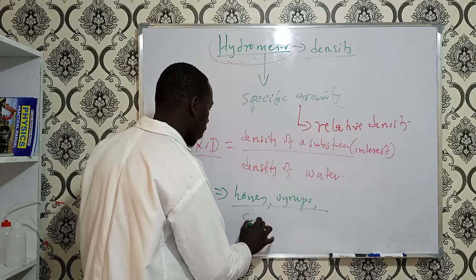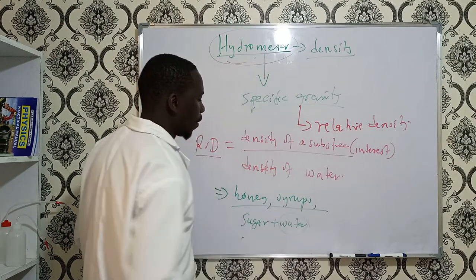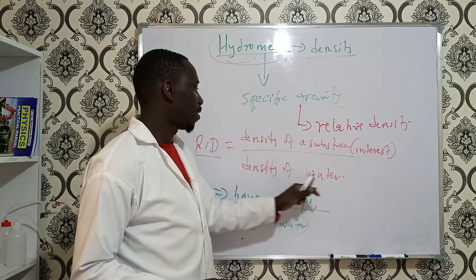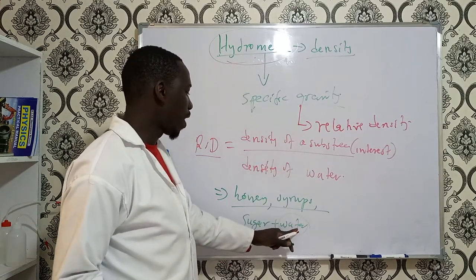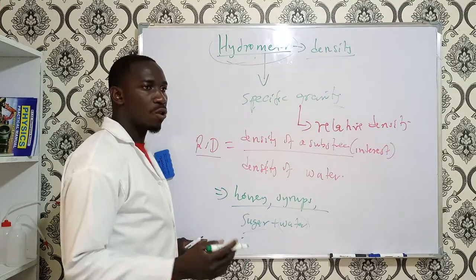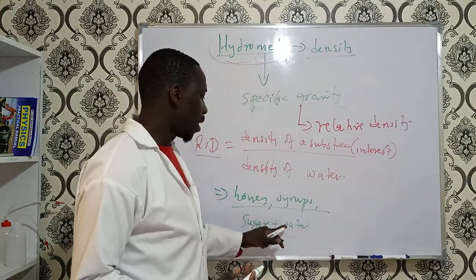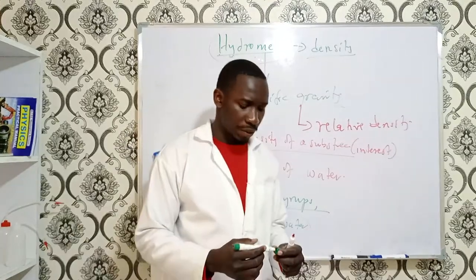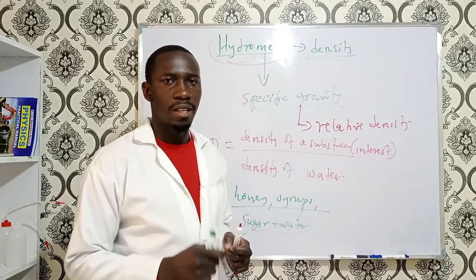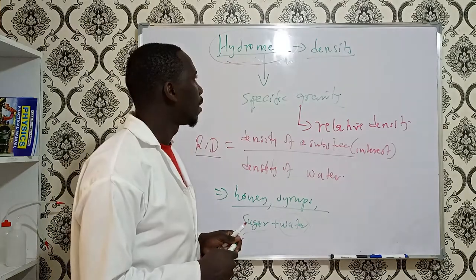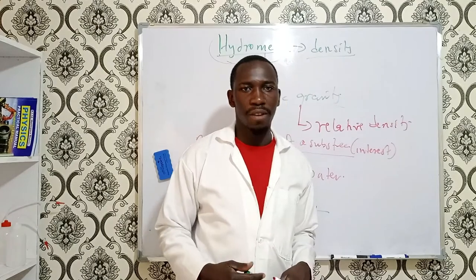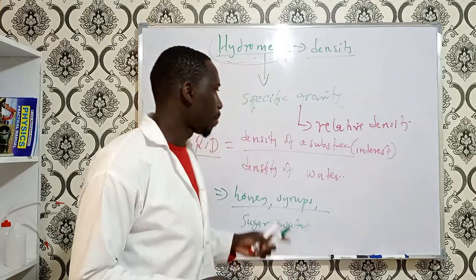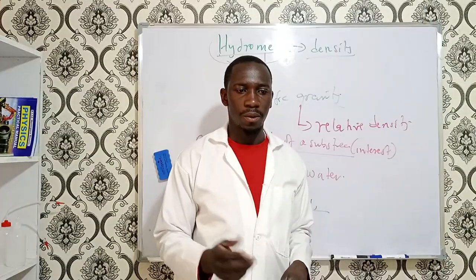The relative density of pure water is 1, since the numerator and denominator are the same substance. When you add sugar to water, the concentration of sugar affects the scale reading on the hydrometer. Now I want us to understand how to read the hydrometer, its parts, and how to determine the relative density of a given liquid with respect to water.